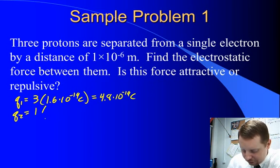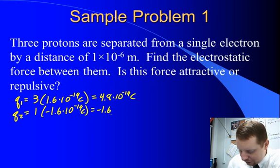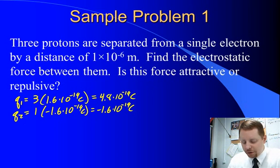Q2, which is one electron, will be 1 times negative 1.6 times 10 to the minus 19 coulombs, or negative 1.6 times 10 to the minus 19 coulombs.